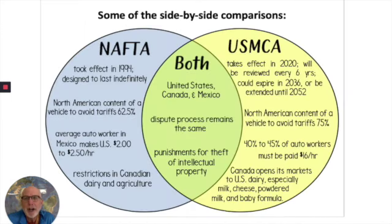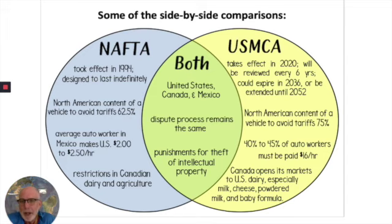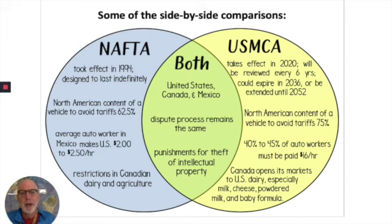Here's a little Venn diagram. On the left side is the old agreement of NAFTA, which was started in 1994. Cars are the example here: any car made in North America to avoid taxes or tariffs had to have 62.5% of the parts manufactured in North America. That has been upgraded now in the USMCA to 75%.